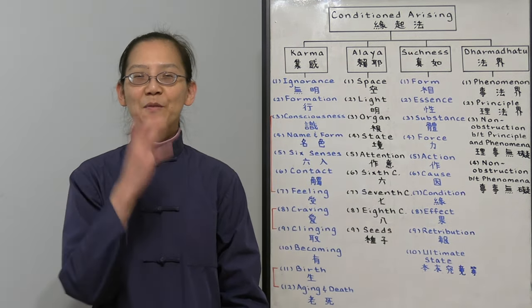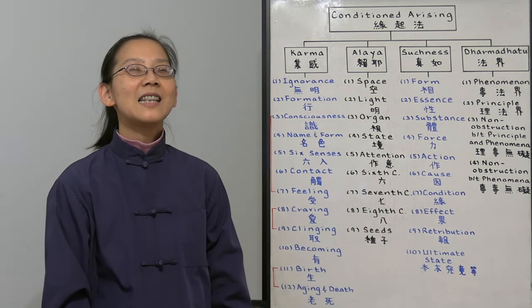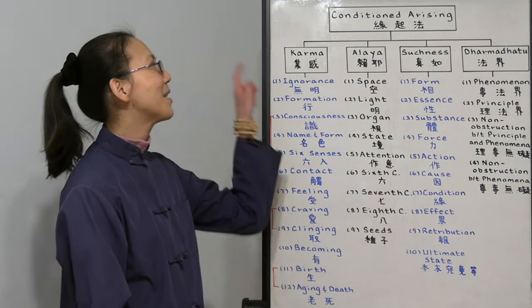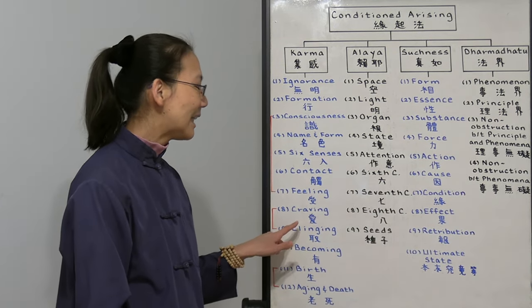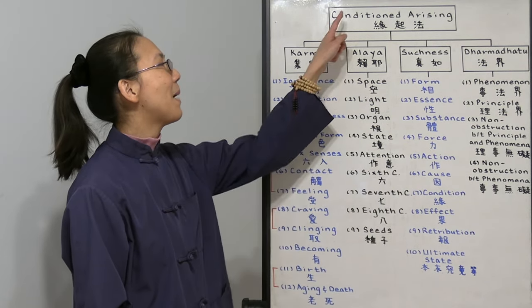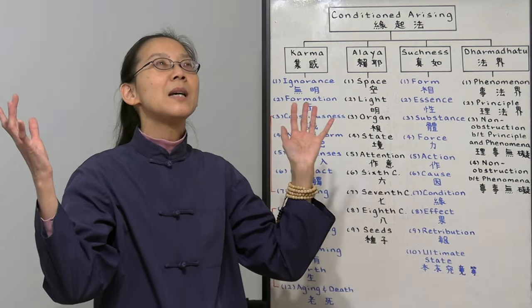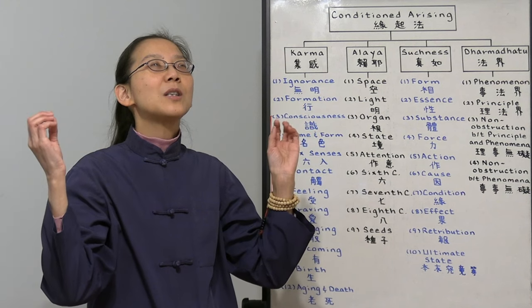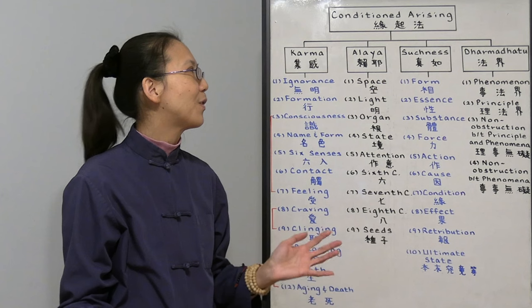So to summarize, there are four kinds of conditions arising. One, you can think life is all about karma. We need to reduce our craving and clinging. Number two, maybe everything is about how I think. Everything is created by the mind. So it's like a dream. It's illusory. It all depends on how I perceive my life. Then my life will change for the better.